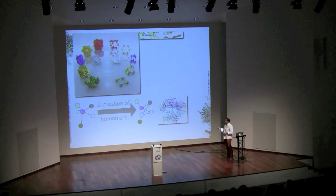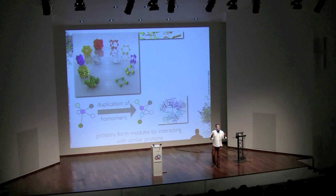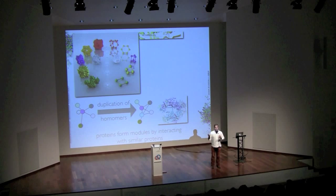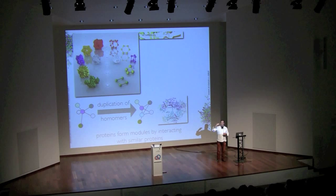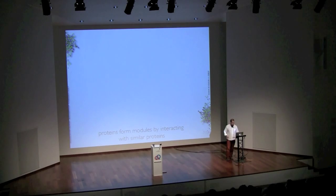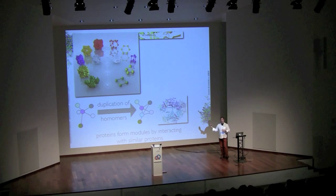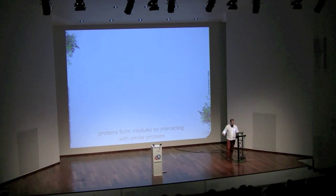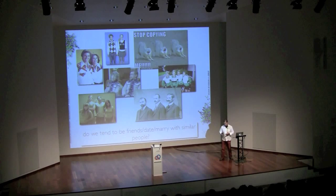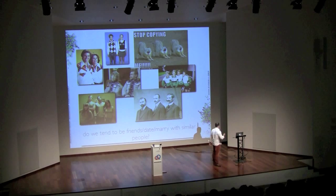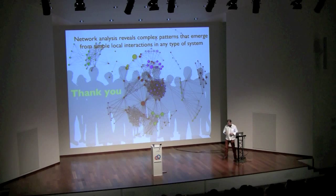We're using the same type of methods to represent and analyze systems whether it's groups of people, groups of molecules, or groups of whatever — because this is a generic approach, and the properties of interactions are very different from the properties of the entities, yet they are common across multiple levels of organization. This means you can learn about social interactions by looking at molecular interactions. Can we infer that people tend to be friends with people similar to them? The take-home message of everything I've said is that network analysis reveals complex patterns that emerge from simple local interactions in any type of system. Thank you very much.